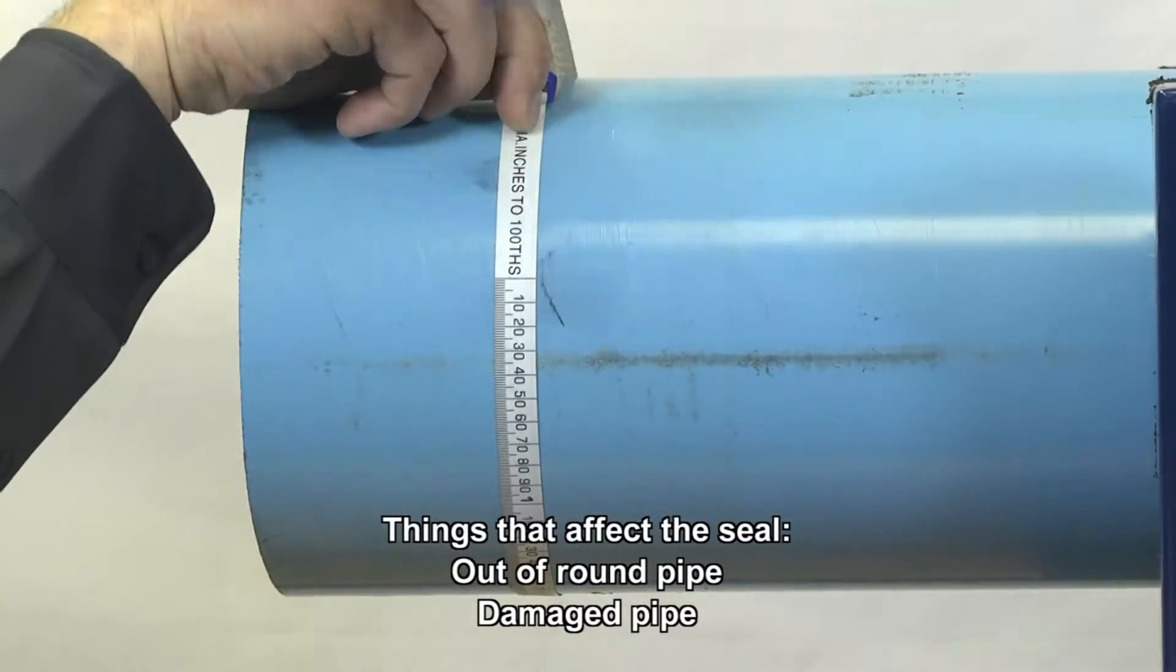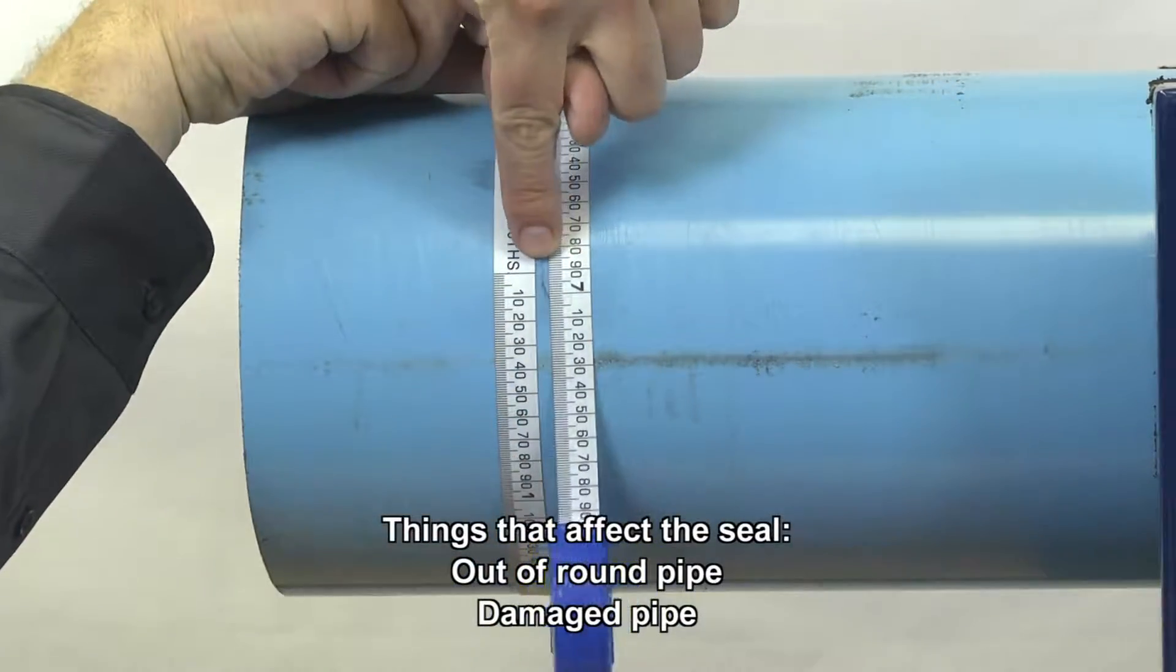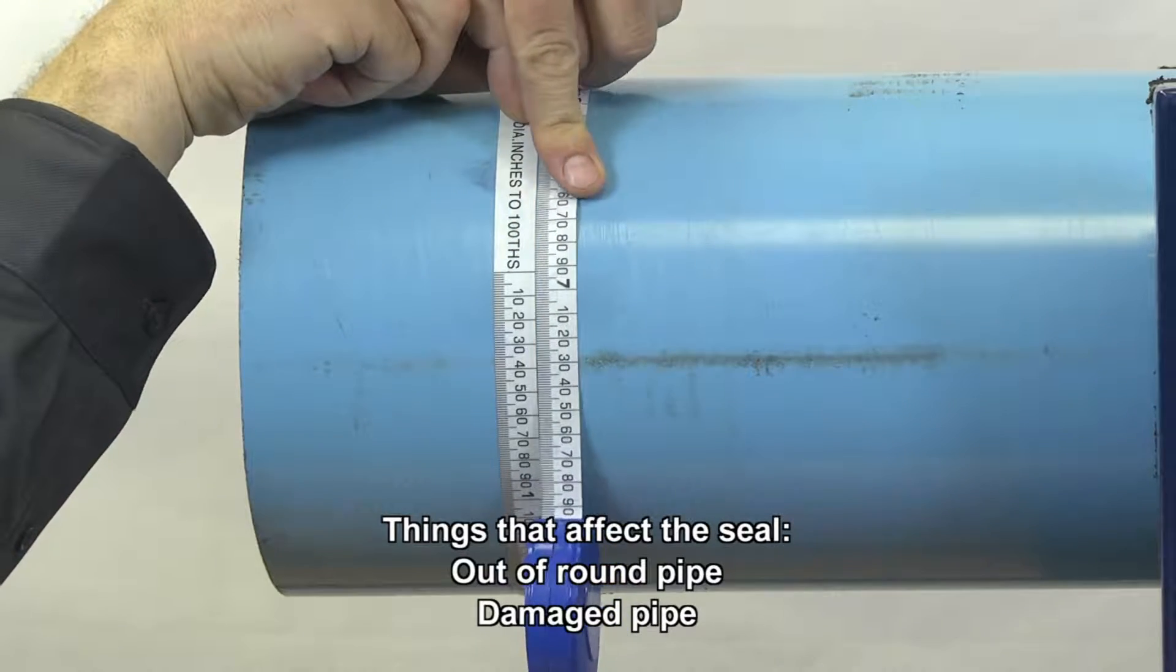Measure the pipe's outer diameter to ensure you choose the right size HiMax. Measure twice to ensure proper size.